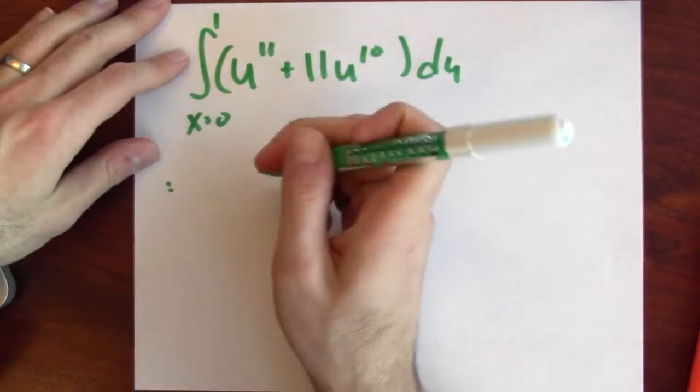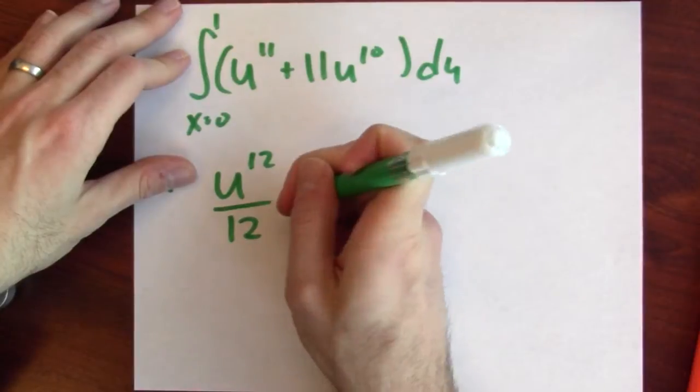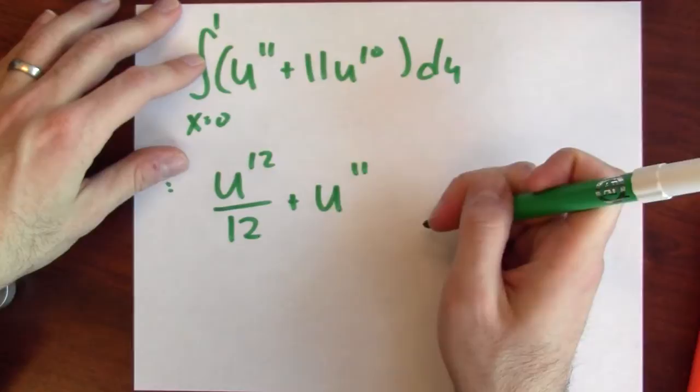All right? This is u to the 12th over 12 plus, what's an anti-derivative of 11 u to the 10th? It's just u to the 11th.